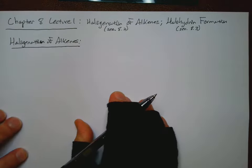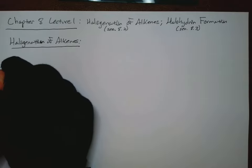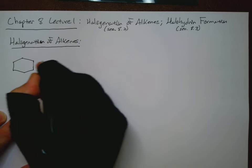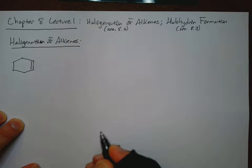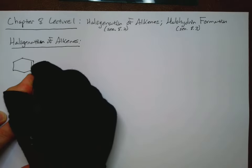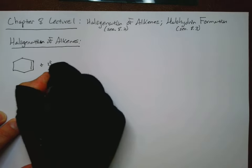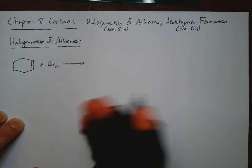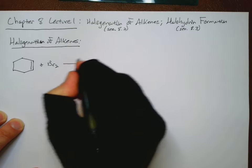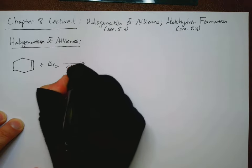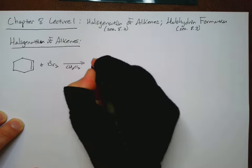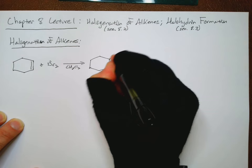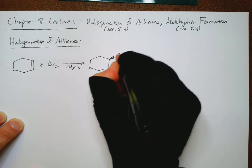So let's take a look at the halogenation of alkenes. In particular, we have the following reaction. Let's just do a cyclohexene here, and Br2. Usually we'll use methylene chloride or something as a solvent. CH2Cl2. And this reaction happens rapidly.